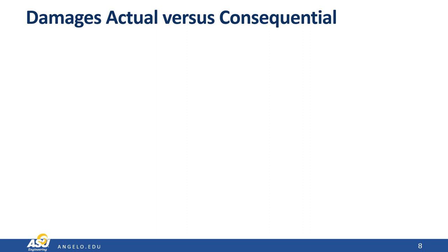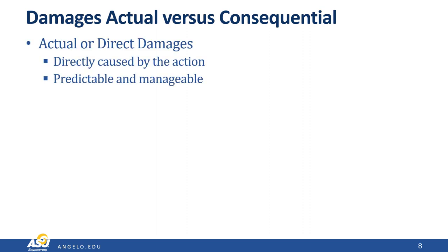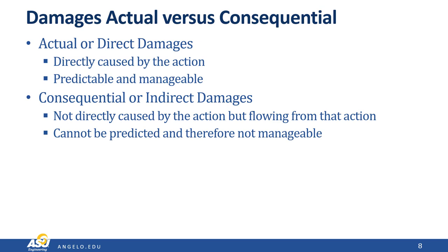Let's talk about damages. It's really important to understand the difference between actual damages and consequential damages. Actual damages — also called direct damages — are damages caused directly by some action. The characteristic of direct damages is that they are predictable, and because they're predictable, they're manageable. Consequential damages — also called indirect damages — don't come directly from the action, but they flow because of it. They're sort of like dominoes that fall. You really can't predict all the dominoes that are going to fall when something bad happens, so they're really not manageable.